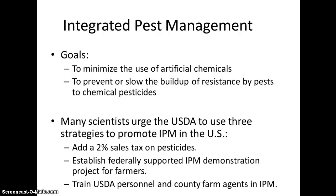Using fewer chemicals also helps prevent or slow down the buildup of resistance by pests. Three ways scientists urge the USDA to promote integrated pest management: adding a sales tax on pesticides to make them more expensive, supporting programs that demonstrate and educate farmers on integrated pest management, and training county farm agents and personnel to in turn train farmers in these methods.